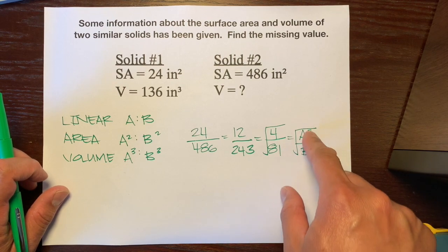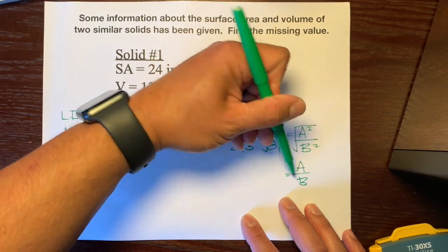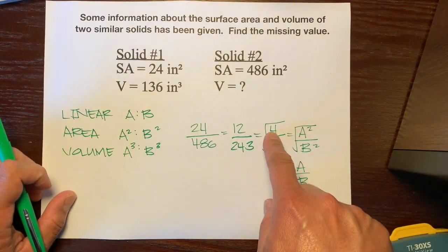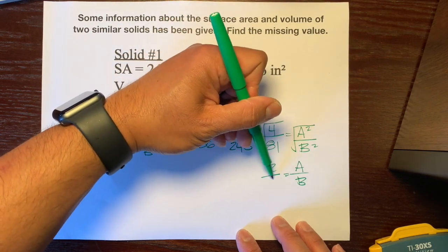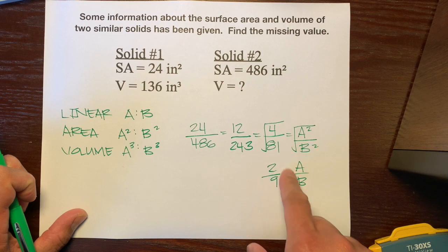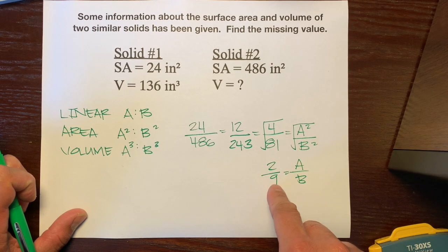So, the square root gets rid of the squares here to be A over B. So, we have the linear scale factor. And the square root of 4 is 2. The square root of 81 is 9. So, this is our linear scale factor. It's just A to B, which is 2 to 9.